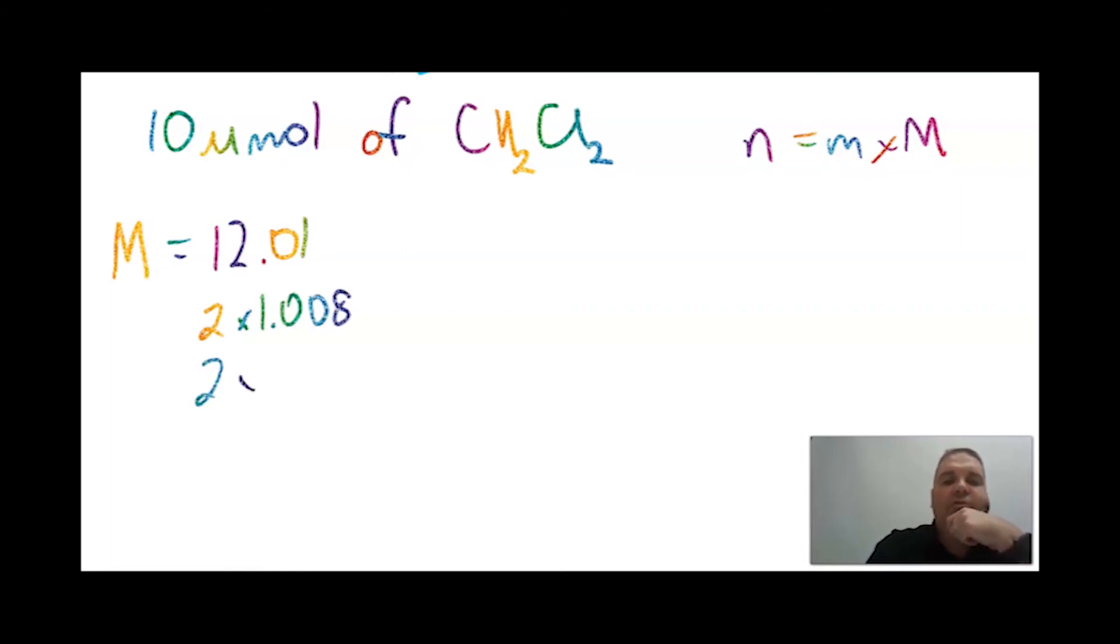I'm going to go to a different color here - I found this rainbow color so I'm just going to go with rainbow just to make it a bit more fun. So we've got 10 micromoles of dichloromethane, CH2Cl2. Again I'm still going to use number of moles equals mass times molar mass. We need to work out the molar mass of dichloromethane firstly. We've got 1 carbon which is 12.01, 2 hydrogens which is 1.008, and 2 chlorines which are 35.453. When you add all those up you get a molar mass of 84.932 grams per mole.